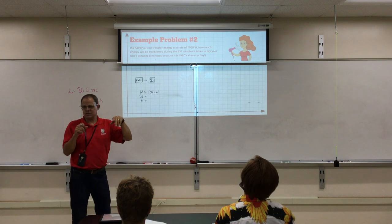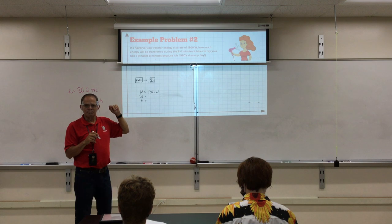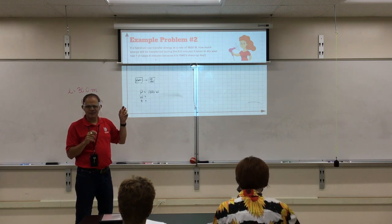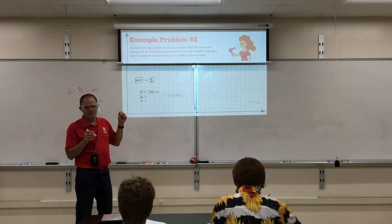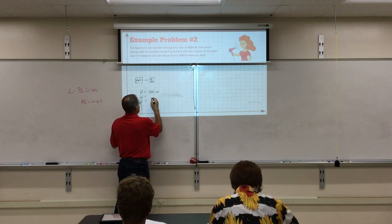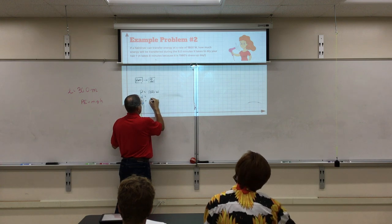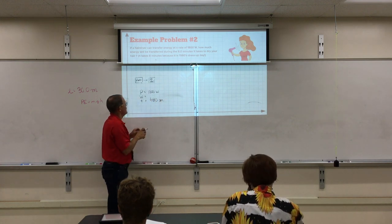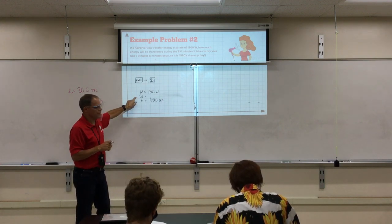What else do we know? We know one more thing. Jayden? The time is what? But we want that in. Can you do that in your head? Or your calculator? 8 times 60. 8 times 6. 480. Okay? And we are trying to find the energy transfer, which is the work. Okay?